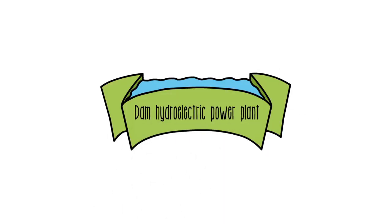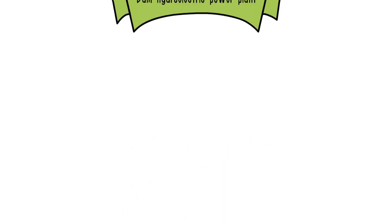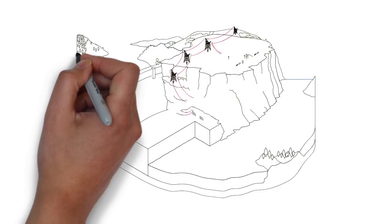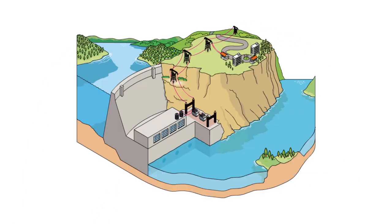The most common type are dam hydroelectric power plants, in which water carried by rivers is stored in a reservoir and released when energy is needed.